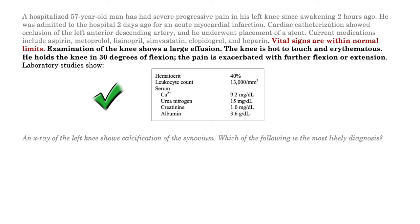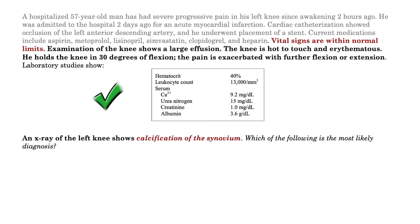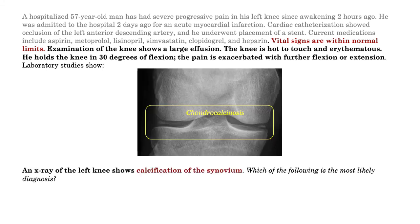We'll take a peek at the data. The numbers are unrevealing, other than an elevated white blood cell count of 13,000. But look at this x-ray — calcification of the synovium. I've heard of calcification of the cartilage, as in chondrocalcinosis, but calcification of the synovium is not a mainstream term that we kick around in the clinic.